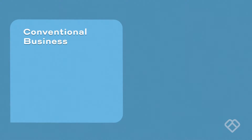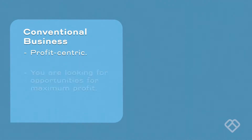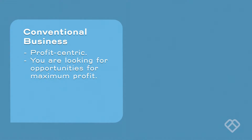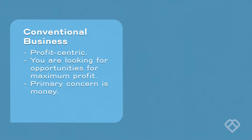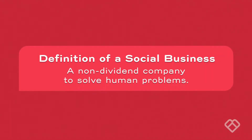Conventional business is profit-centric. You're looking for opportunity where you get the maximum profit out of it — always sensing where the money is. But here in social business, you're looking at a problem: problem of poverty, problem of unemployment, problem of environment — you name it. Pick one problem and come up with a business idea to solve it, removing any intention of making personal money out of it. That becomes social business. We define it as a non-dividend company to solve human problems.